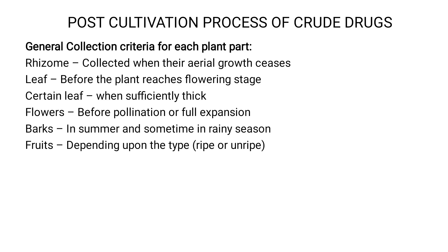Certain leaves like aloes can be collected when they are sufficiently thick. If you are collecting flowers, they should be collected before pollination or before full expansion, because once pollination starts, the flowers begin to become fruits and the constituent content decreases. Barks are generally collected in summer and sometimes in the rainy season — in the rainy season because bark can be stripped off more easily, and in summer because bark is believed to contain a higher amount of constituents.